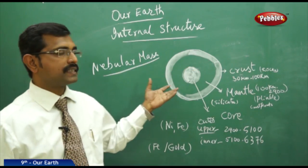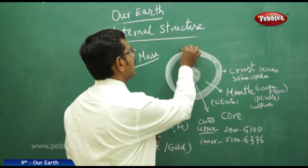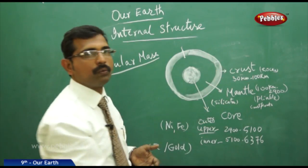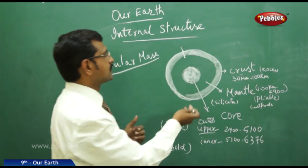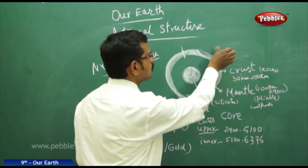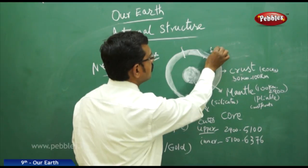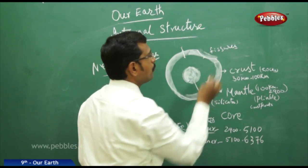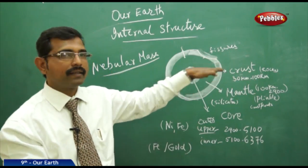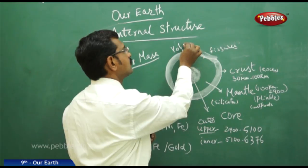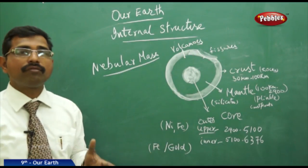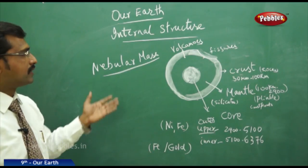This is still active — volcanoes are the best examples, where silicate and other molten material from the mantle is poured out. Through fissures in the ocean basins, magma is also pushed out from the mantle side. So volcanoes and fissures in the ocean show that the earth is still in an active condition, with molten material that is part of the original nebula.